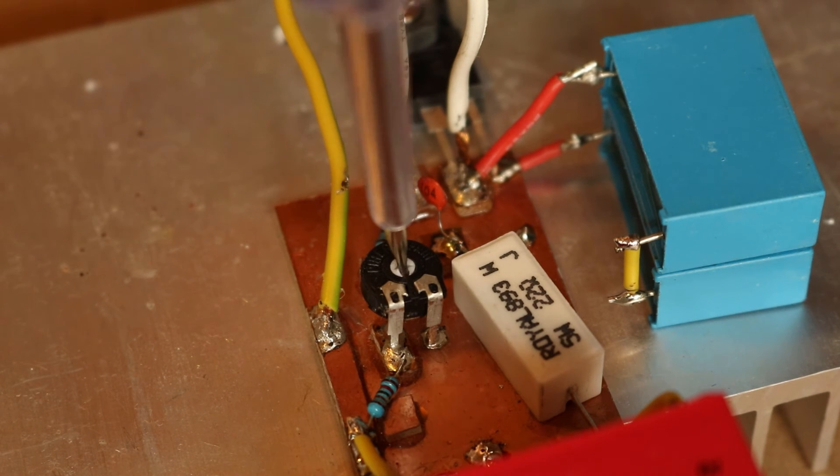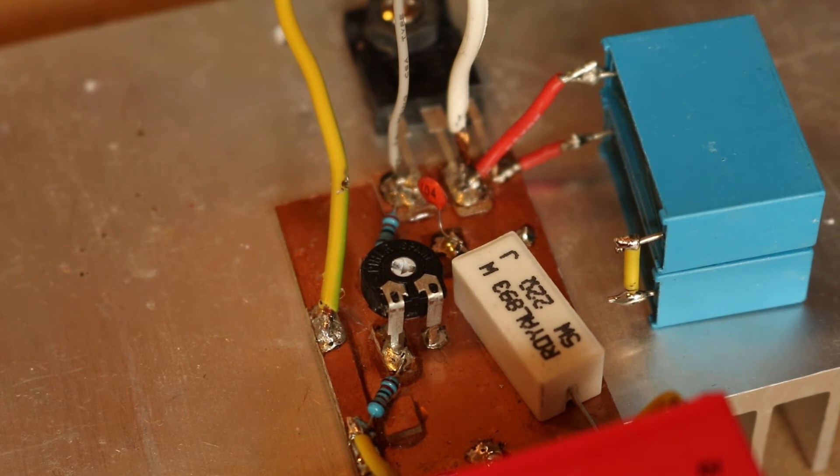Before you connect the circuit to a power supply it's important that you turn the potentiometer to the right so the gate has no voltage yet.